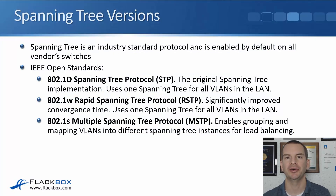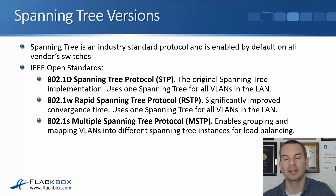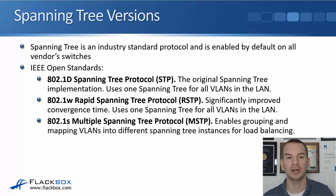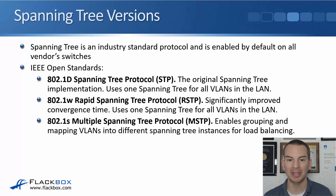In this lecture, you'll learn about the different Spanning Tree versions. There have been a few different versions over time which have improved on the previous versions. When I was first learning about this, it was super confusing, but there is actually a simple way to explain it by breaking it down into the open standards and also into the Cisco proprietary versions. Starting off with the open standards: the first original implementation of Spanning Tree was 802.1d, which uses one Spanning Tree for all of the different VLANs in the LAN — just one instance for everything.